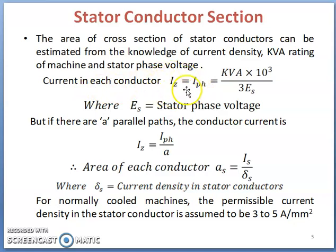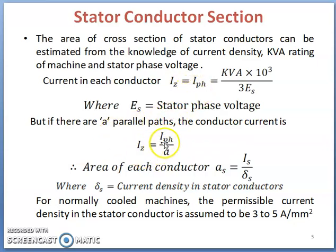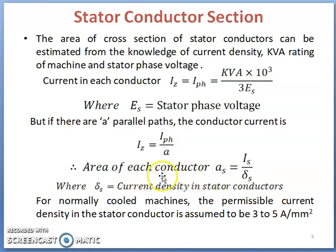Current in each conductor Ij equals Q divided by 3*Es, where Es is the stator phase voltage. But if there are A parallel paths, then conductor current Ij equals Iph divided by A. Then the area of each conductor As equals Is divided by delta_s, where delta_s is the current density in the stator conductors.